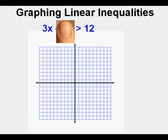I like to graph lines in standard form by finding the x and y intercepts. To find the x-intercept of this boundary line, we cover the y term with our thumb. That leaves 3x is greater than 12. We divide both sides by 3 and get x is greater than 4, so we mark the x-intercept at x equals 4.